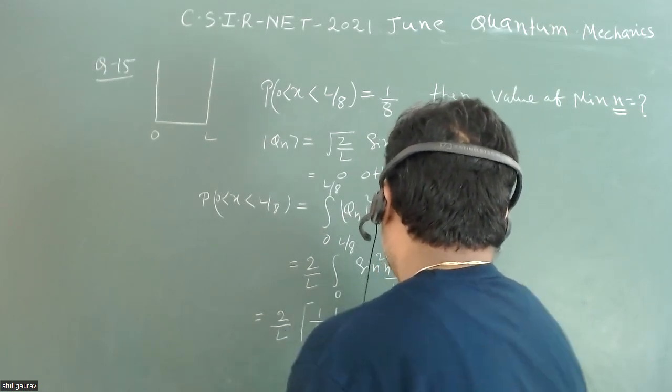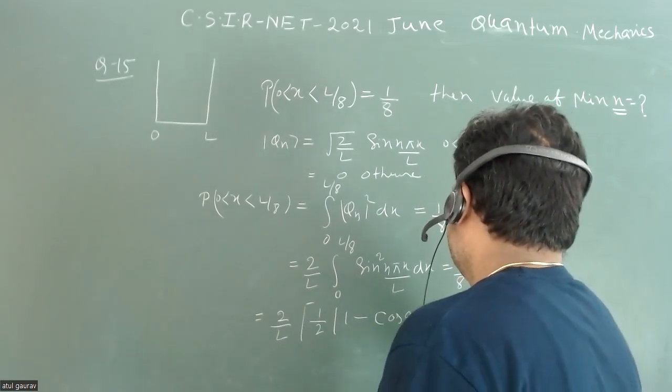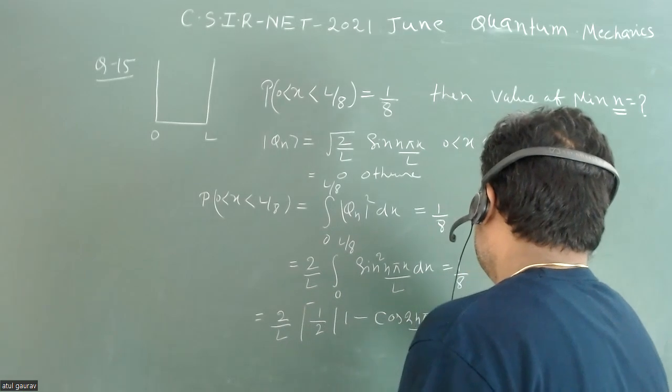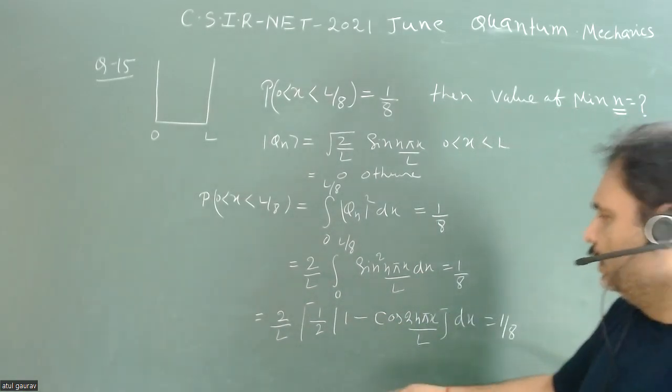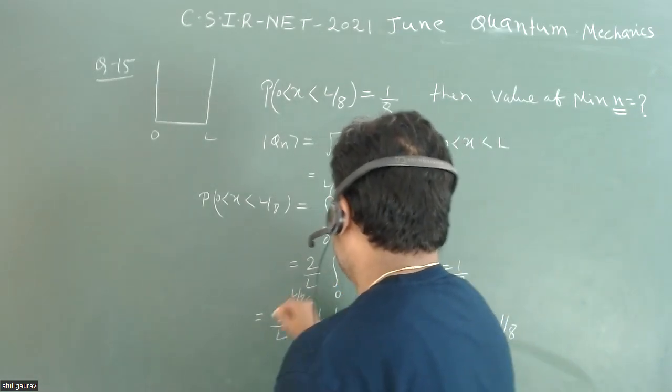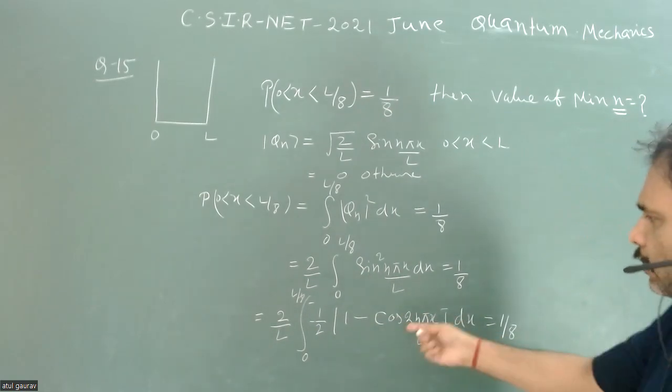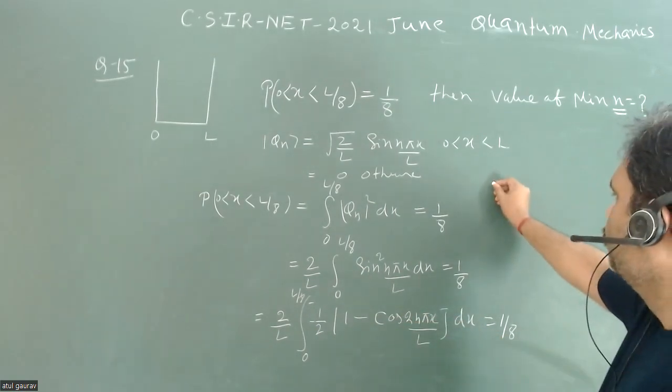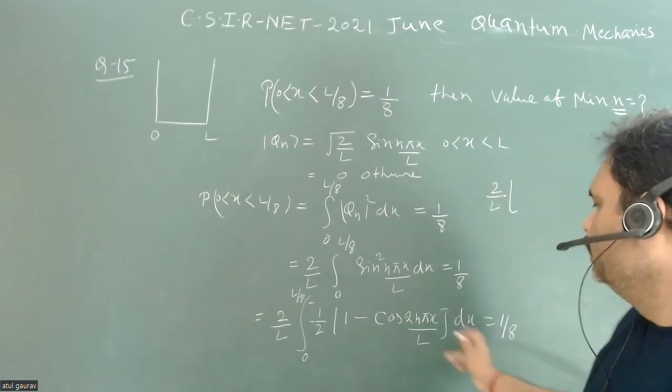This will be 2/L times 1/2 times [1 - cos(2n*pi*x/L)], and we have to go for this integration. This value is 1/8. When we integrate it, we will get 2/L will remain there, so this will be x from 0 to L/8, which is basically L/8.